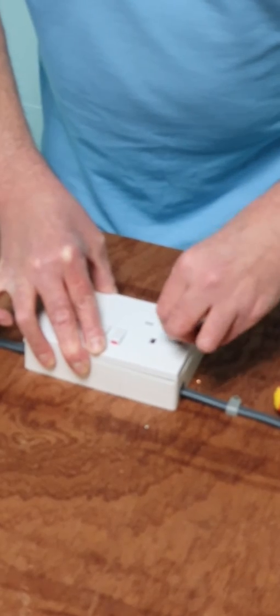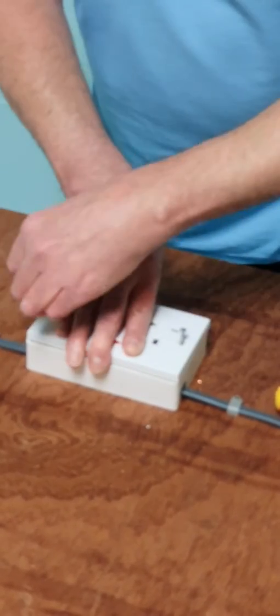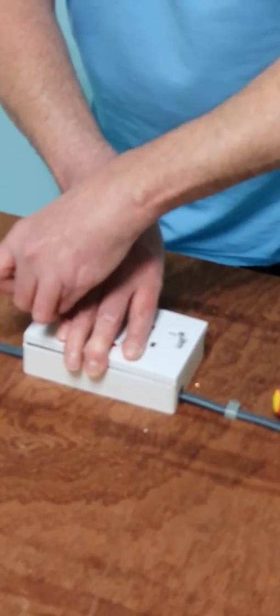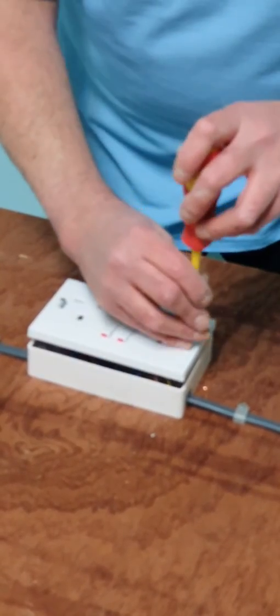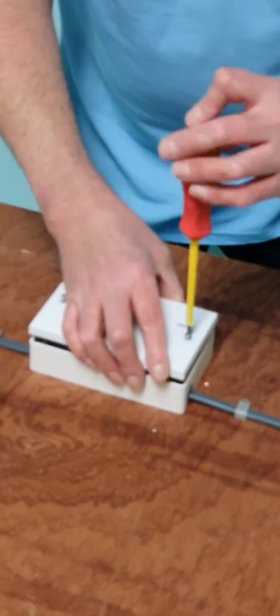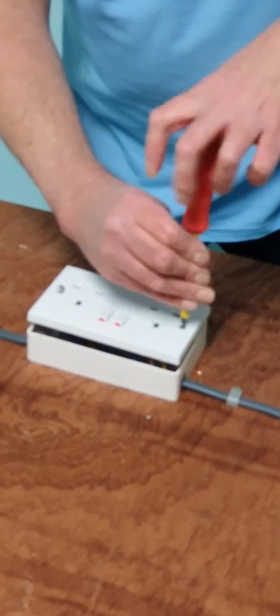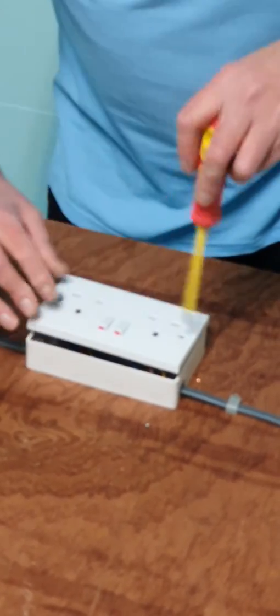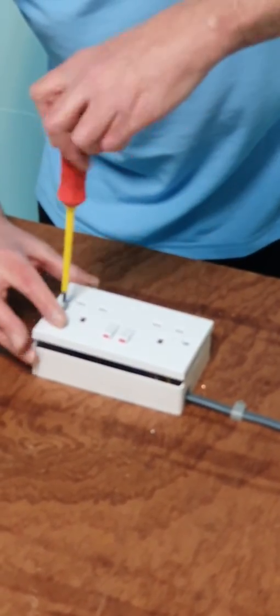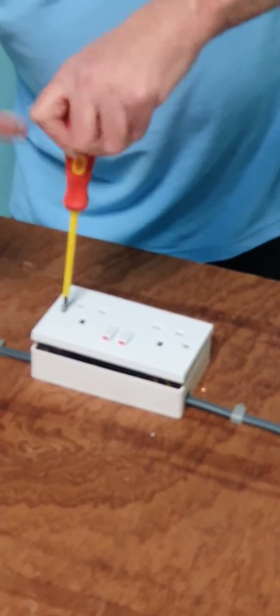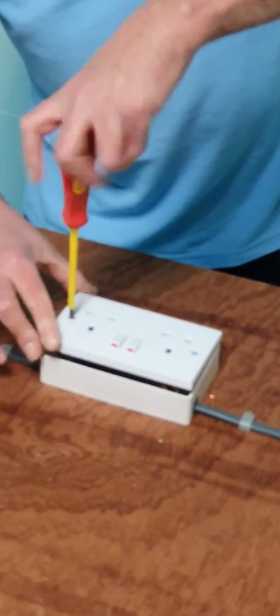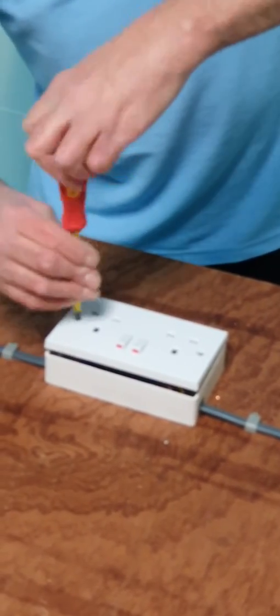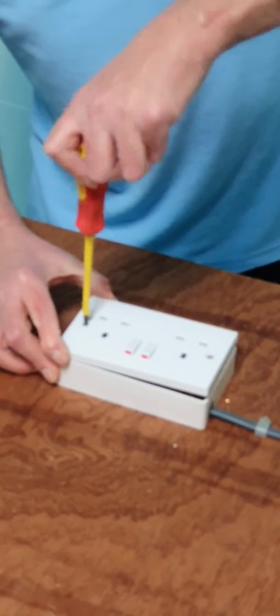So again we can go back to our position. Socket screws. Into our box. Make sure with your socket screws they're going in nice and freely. Especially in surface boxes. If you feel that the screw isn't quite going in. Check the end of the screw. Check the box.